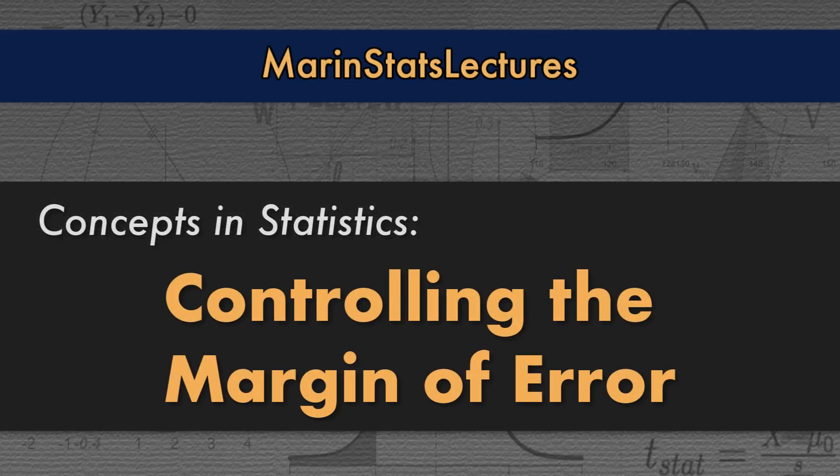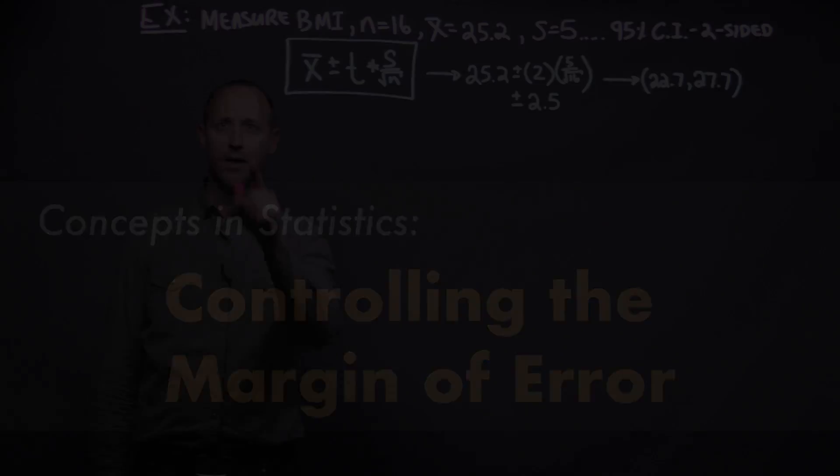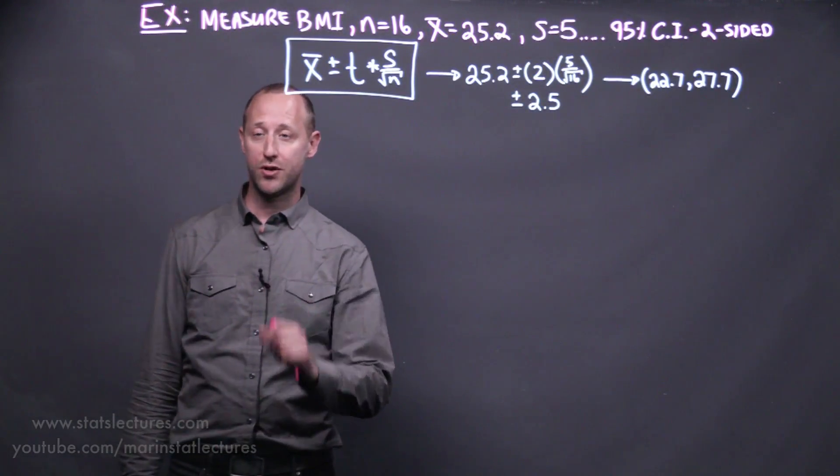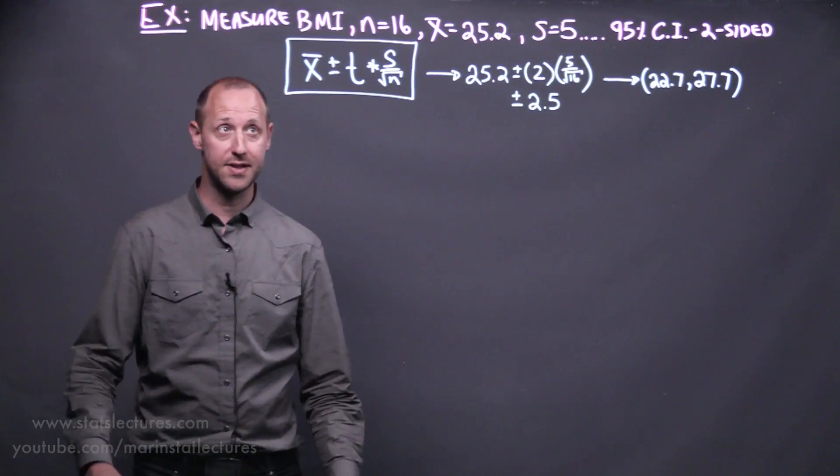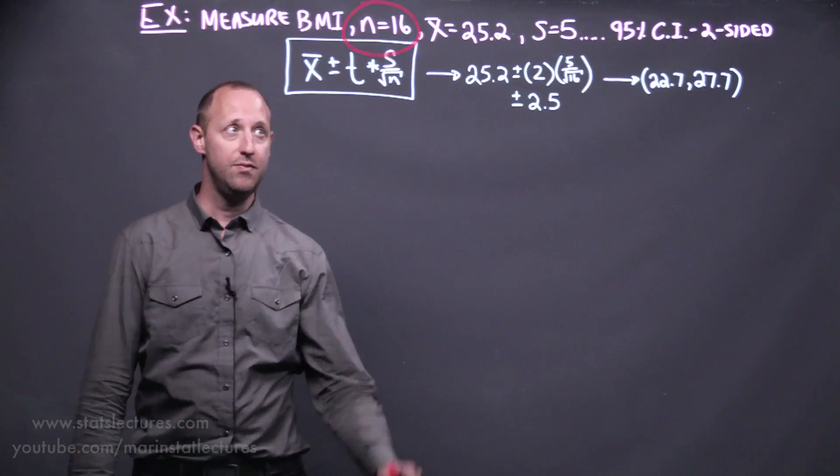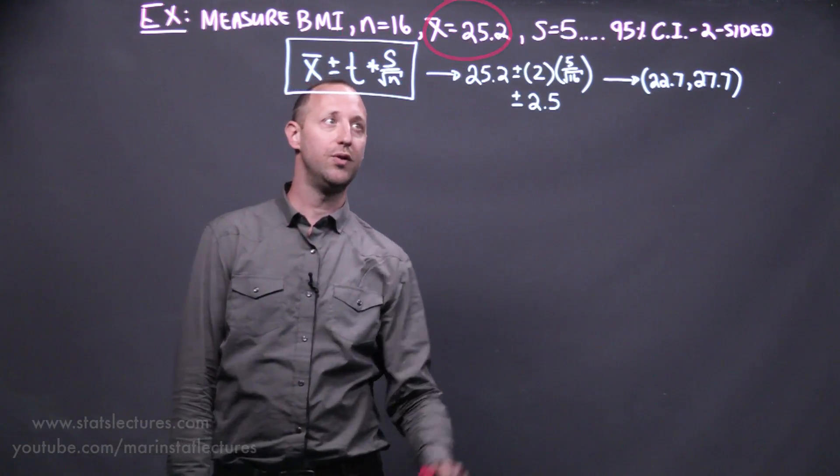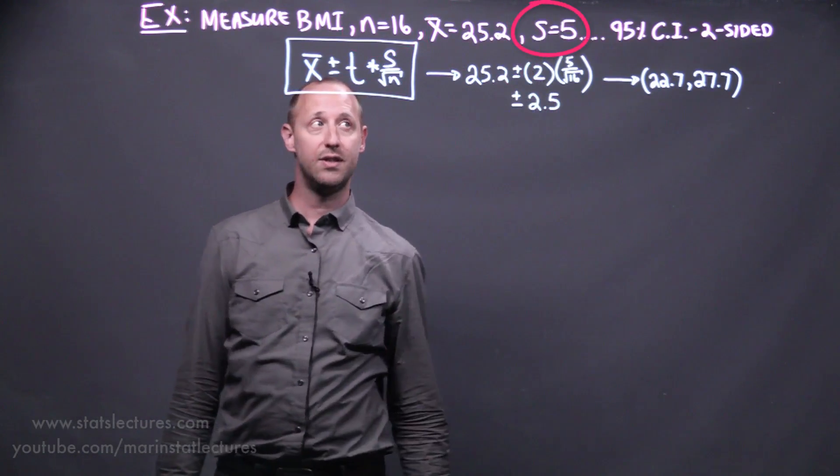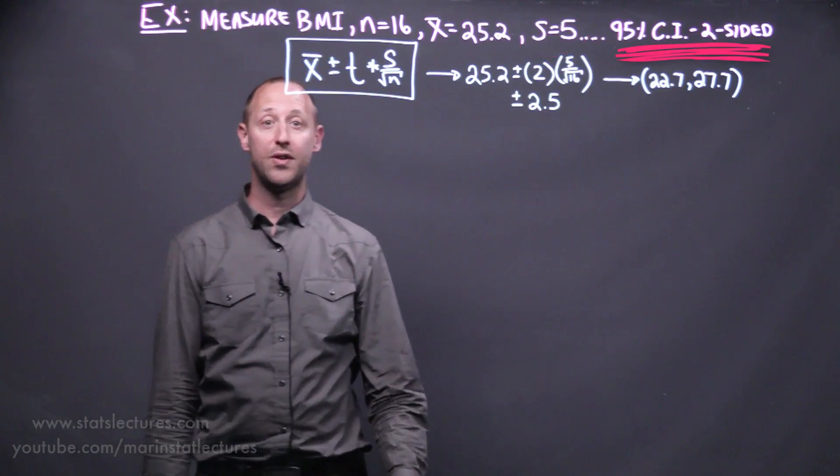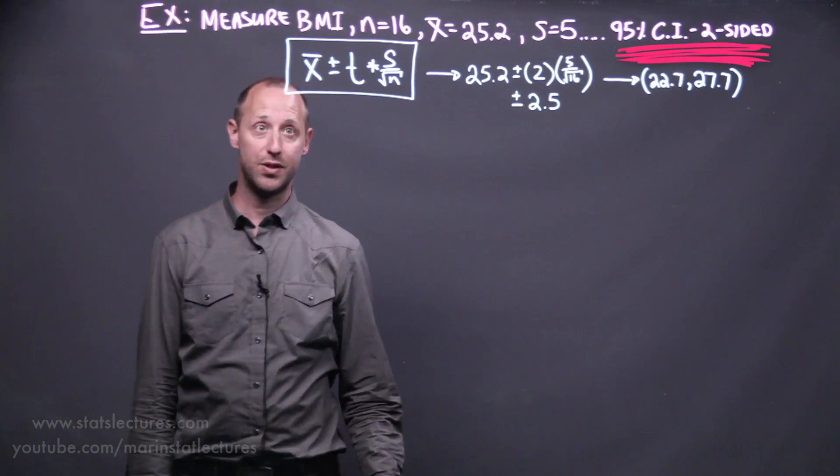So let's talk a little bit about controlling the margin of error. We worked through this example where we measured BMI within a sample of 16 observations. We found the sample mean to be 25.2, sample standard deviation of 5, and we built a 95% confidence interval that was two-sided.